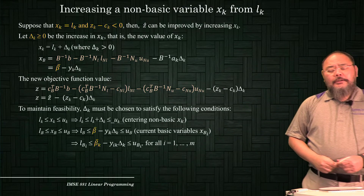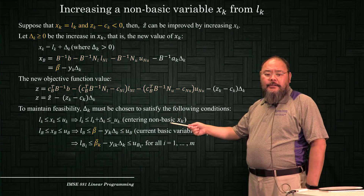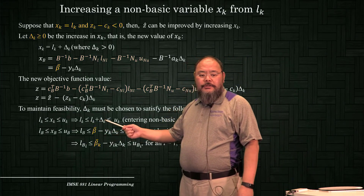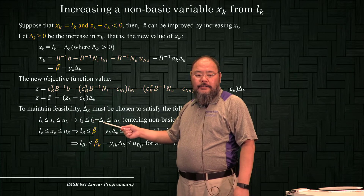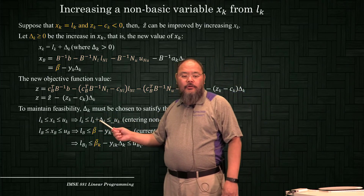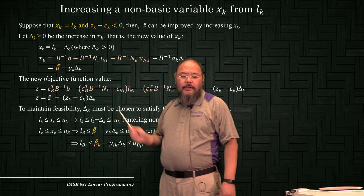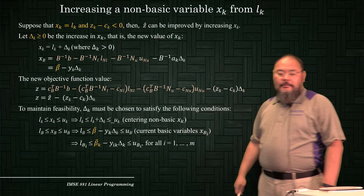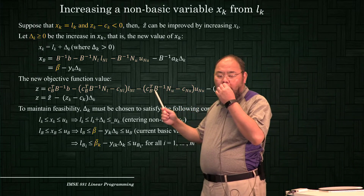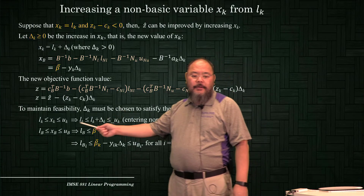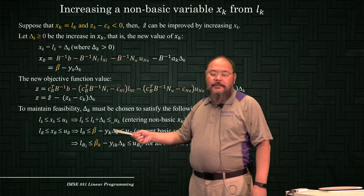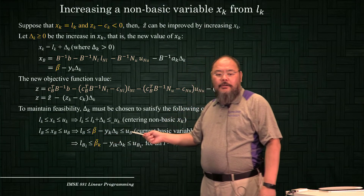However, for the current entering non-basic variable xk, we want this change from the lower bound to a certain value, but the resulting new value should still be between the lower and upper bound. So the maximum delta_k can move is uk minus lk for that entering variable. Also, since the entering non-basic variable will also impact changes in the current basic solution xb, we want to maintain the new basic solution still between their lower and upper bound.